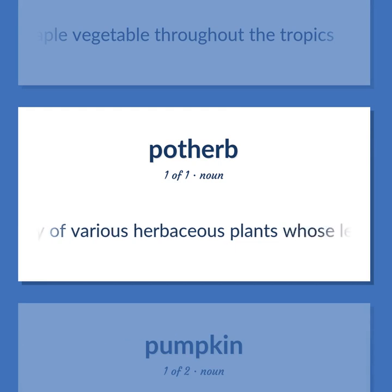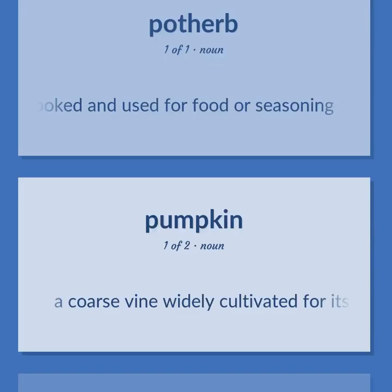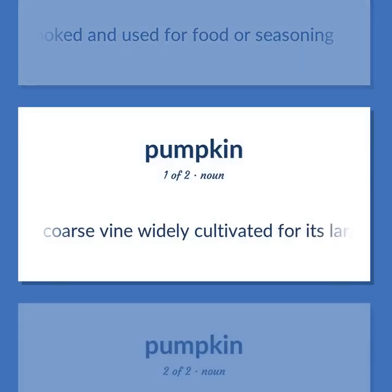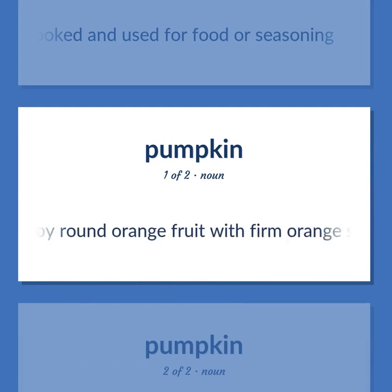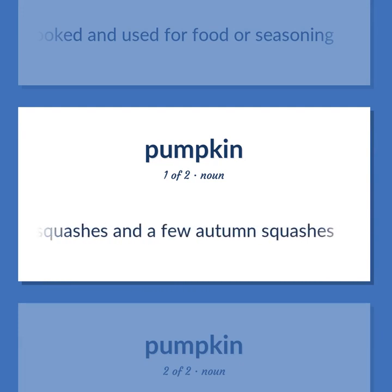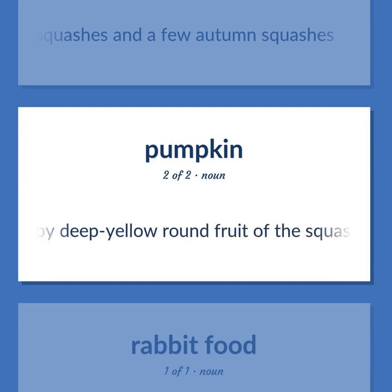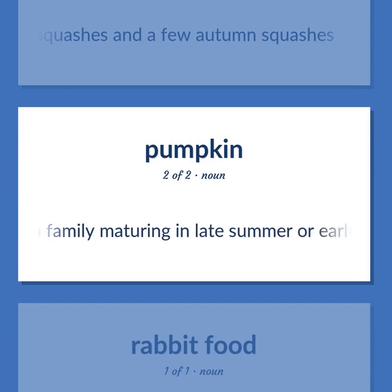Potherb: Any of various herbaceous plants whose leaves, stems, or flowers are cooked and used for food or seasoning. Pumpkin: A coarse vine widely cultivated for its large pulpy round orange fruit with firm orange skin and numerous seeds — subspecies of Cucurbita pepo include summer squashes and a few autumn squashes. Usually a large pulpy deep-yellow round fruit of the squash family, maturing in late summer or early autumn.